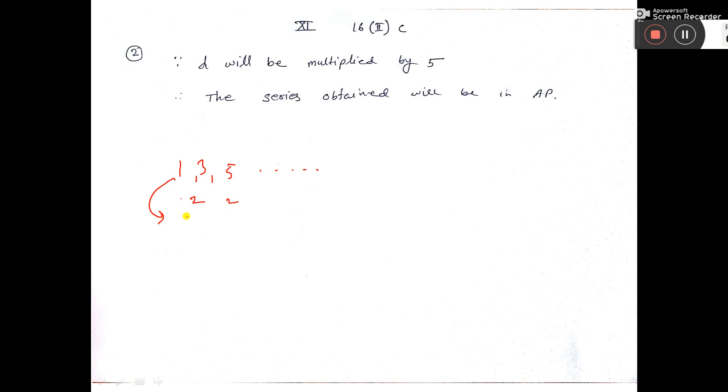If you multiply by 5, it becomes 5, 15, 25. What is the common difference here? 15 minus 5 is 10, and 25 minus 15 is also 10.